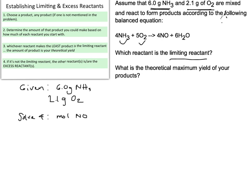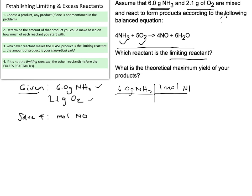We're going to adjust this in the typical way we've seen with stoichiometric problems. We must take what we are given and convert it into the language of the equation, which is moles. Starting with our 6 grams of NH3, in order to convert into moles we divide by the molar mass, which is 17.03 grams per mole. That calculation gives us 0.35 moles of NH3.